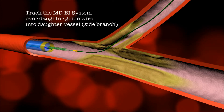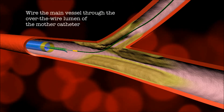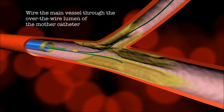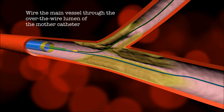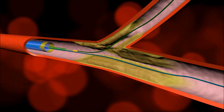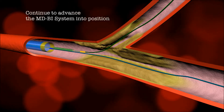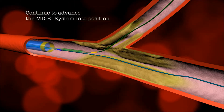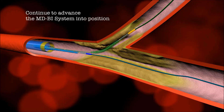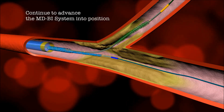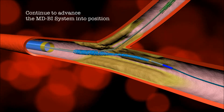The system is then advanced to the carina. Note, the daughter stent demonstrated in green is mounted on the distal half of its delivery balloon. The bifurcating stent is assembled on site by pulling back the daughter catheter to align the two proximal markers.